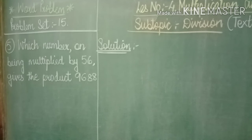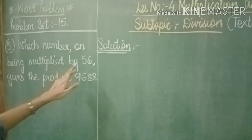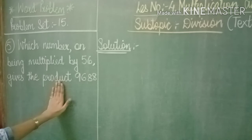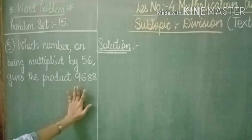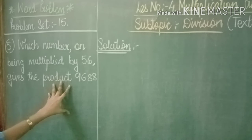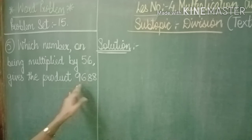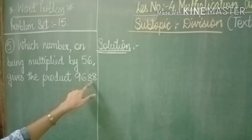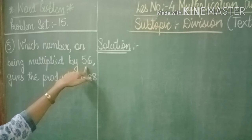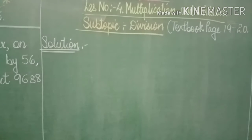Let's see the 5th sum, problem set 15, word problem only. Which number on being multiplied by 56 gives the product 9688? They have asked us what will be the final answer if the product is 9688. So what we will be doing is we have to divide 9688 divided by 56. We will be writing in the rough work the table of 56.